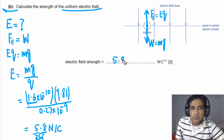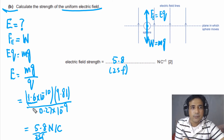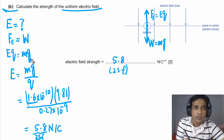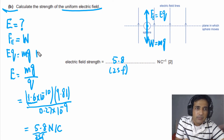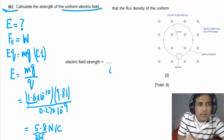The final answer is 5.8 N/C to 2 significant figures. This question has two marks: the first mark (C mark) is awarded for writing EQ = mg, and the second mark (answer mark) is awarded for obtaining the correct answer.